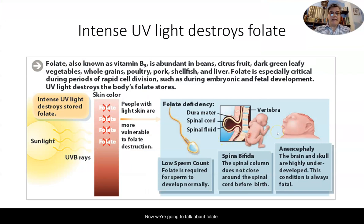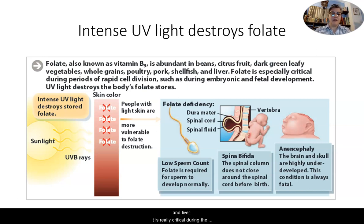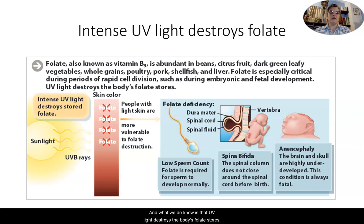Folate is also known as vitamin B9. You can find it in many foods such as beans, citrus fruits, dark green leafy vegetables like kale, collard greens, and spinach, as well as whole grains, poultry, pork, shellfish, and liver. Folate is critical during mitosis or rapid cell division, which occurs during embryonic and fetal development. Importantly, UV light destroys the body's folate stores.